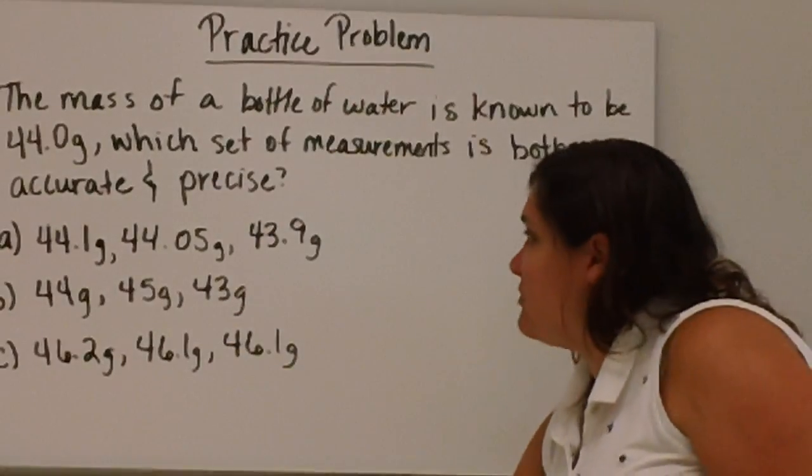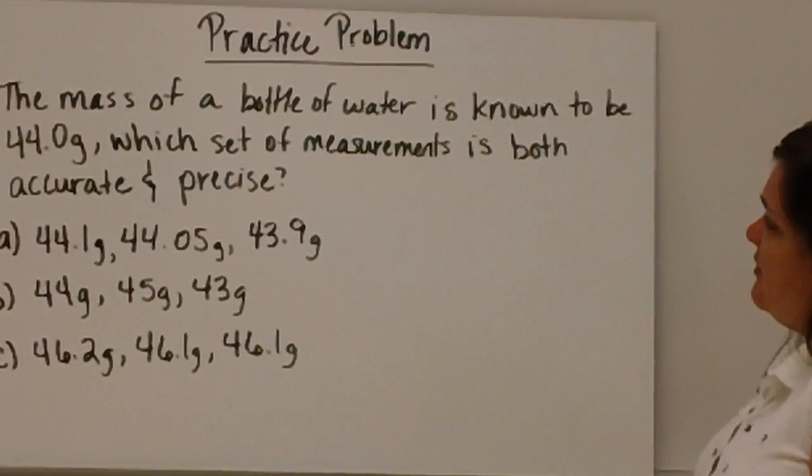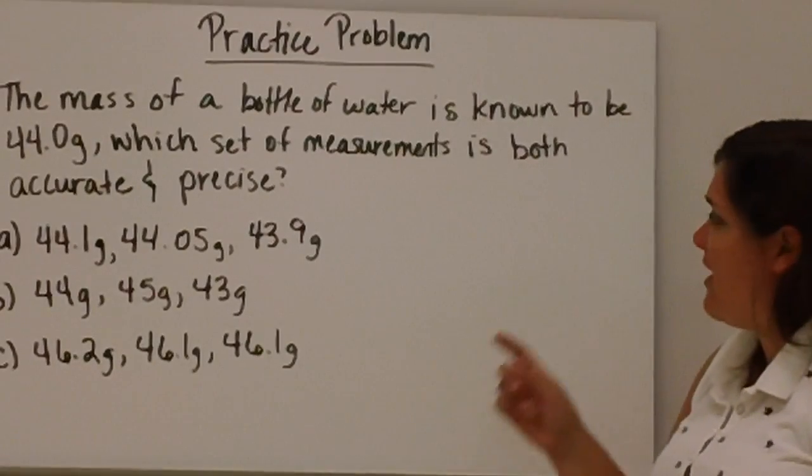Okay, you try this problem. The mass of bottled water is known to be 44.0 grams. Which set of measurements is both accurate and precise?